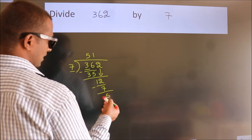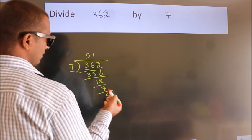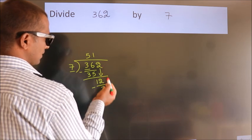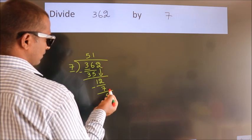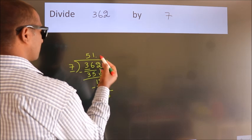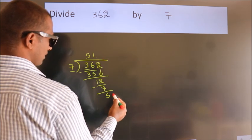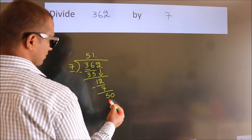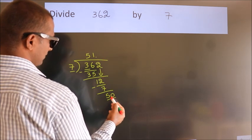After this there are no more numbers to bring down. So what we do is we put a dot and take 0, giving us 50.